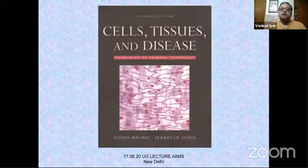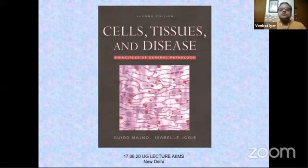Although Robins is your standard textbook, a lot of the images I'll be showing you in general pathology are from this book by Majno and Joris — Cells, Tissue and Disease.